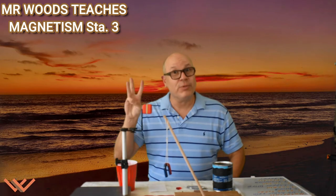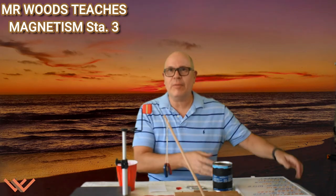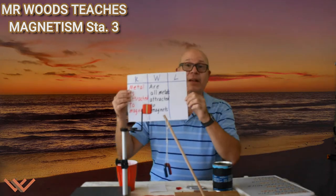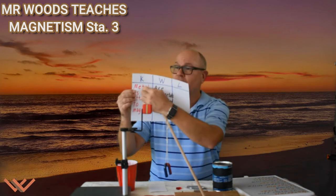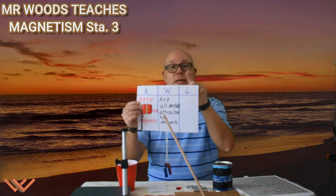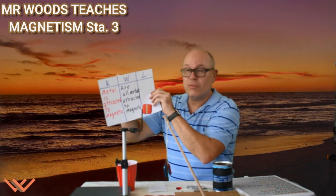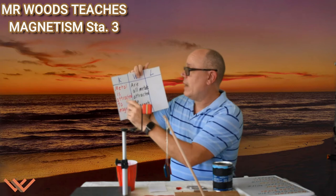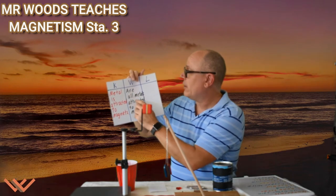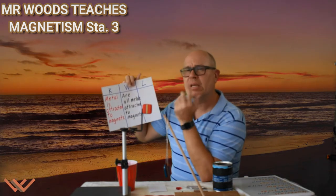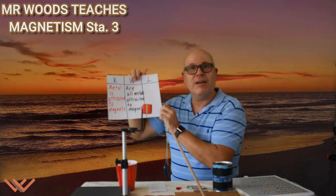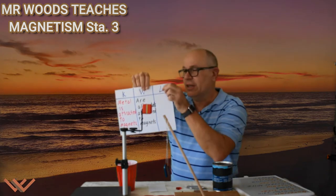We're on Station 3 today, and we're going to be looking at different things, so I want to go over a few things with you first. If you can, fill out something like this — it's a KWL chart. We're going to have three columns: what I know, what I want to know, and what I want to learn. So you write down what you know, something like 'metal is attracted to magnets.' What I want to know: are all metals attracted to magnets? And then at the end of this magnetism station, fill out what you've learned.